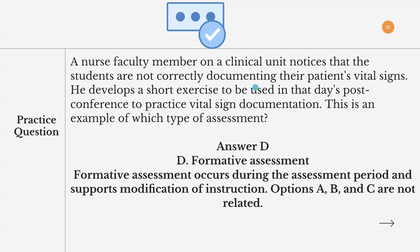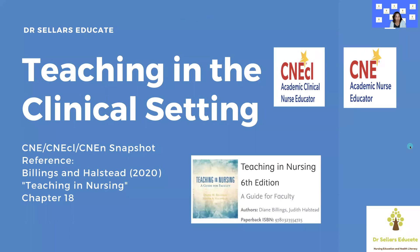D is the correct answer because we know that clinical experiences at this stage — as described in this scenario — involve continuing to give students feedback. We are forming and helping to develop their skills, knowledge, and ability to accurately document and perform patient vital sign documentation. Options A, B, and C are not related, which is why those are not correct.